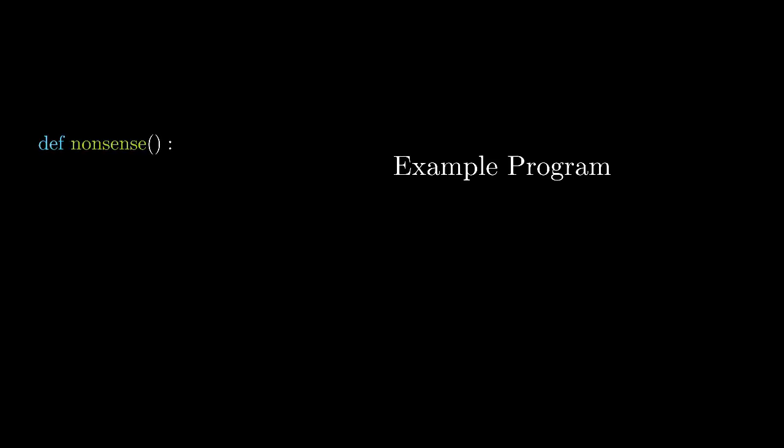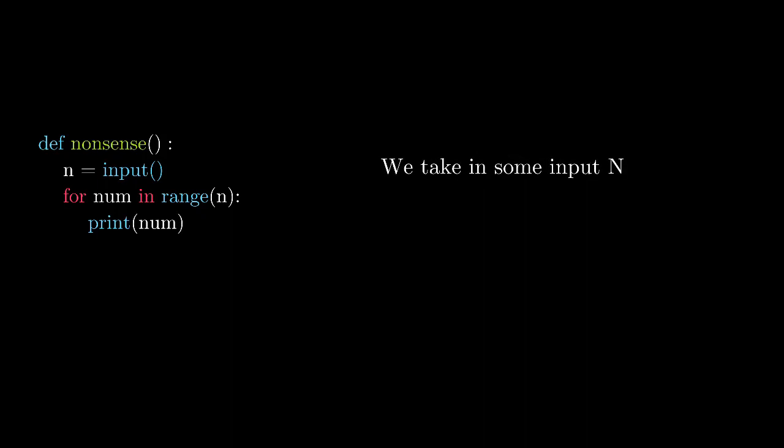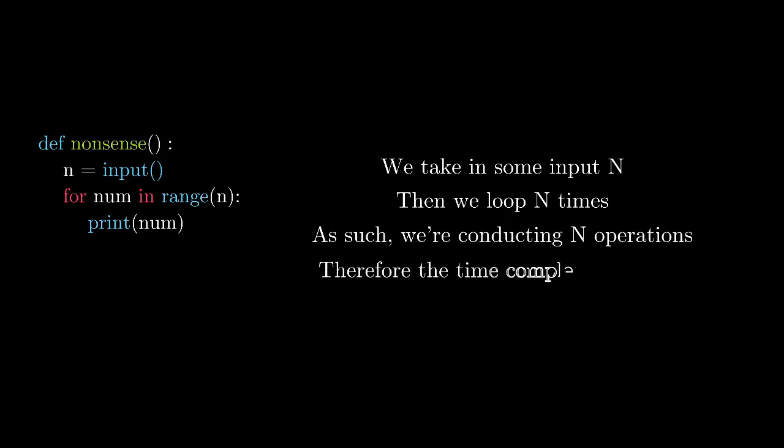Let's take a quick look at a program and attempt to figure out its time complexity. So this program is a nonsense function. We're taking in some input n with the input function from Python, and then we are looping through the range of n times and then we're printing out the number n times. Taking in some input n, then we loop n times. As such, we're conducting n operations. So can you guess what the time complexity is? It's big O of n because we're conducting n operations.